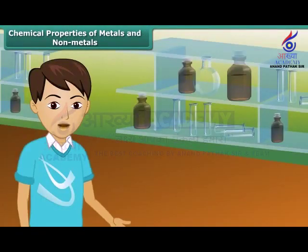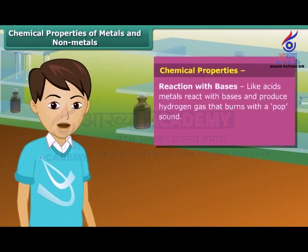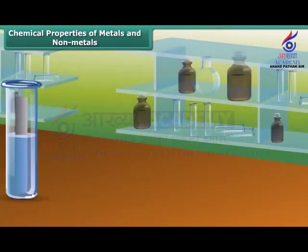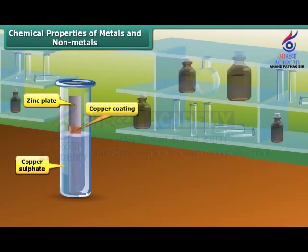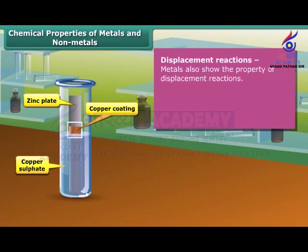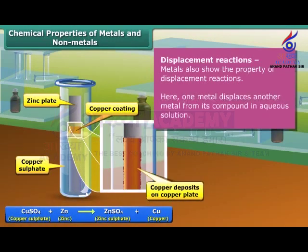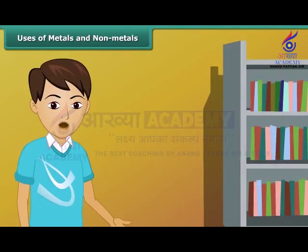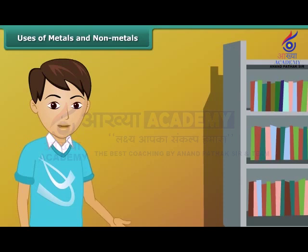Friends, you will be surprised to know that like acids, metals also react with bases and produce hydrogen gas. Non-metals react with bases complexly. Besides these chemical reactions, metals also show the property of displacement reactions. We can see a displacement reaction here in which one metal is displacing another metal from its compound. Till now we have learnt about the physical and chemical properties of metals and non-metals. Now let's move on to another important topic — what are the uses of these metals and non-metals?